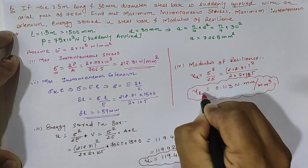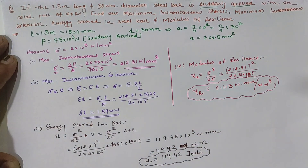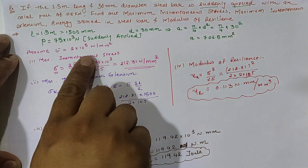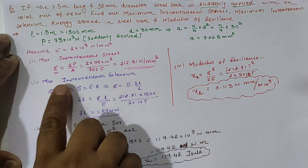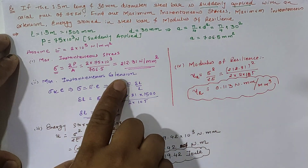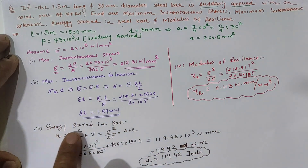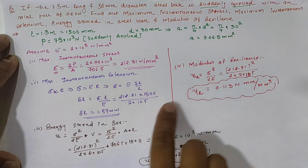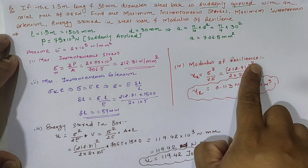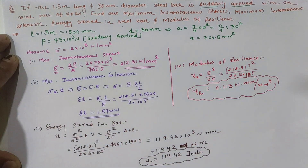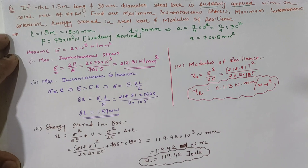So thus we can calculate maximum instantaneous stress, maximum instantaneous extension, energy stored in the bar, and modulus of resilience from the given example. Thank you.